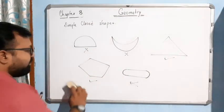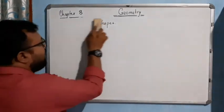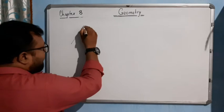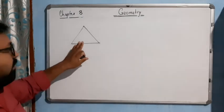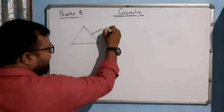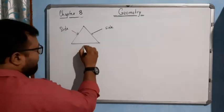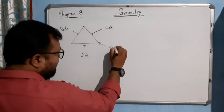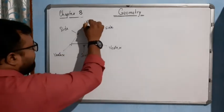Now, types of polygons. Minimum sides for a polygon — we require three sides. So a polygon made of three line segments is a triangle. This is known as a side, this side, this one is also a side, this is also a side. This point is known as a vertex, this is also a vertex, also vertex.